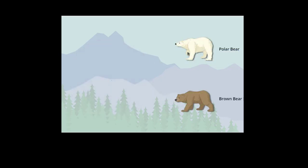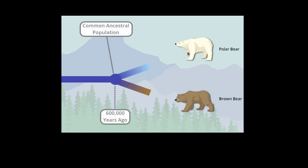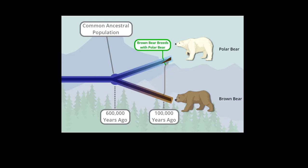Looking at both lines of DNA evidence has helped scientists gain a more detailed understanding of how and when the polar bear and brown bear lineages split. Nuclear DNA suggests that brown bears and polar bears began to diverge about 600,000 years ago. The mitochondrial DNA would have begun to diverge at this time too, but then about 100,000 years ago, a female brown bear and a male polar bear interbred.